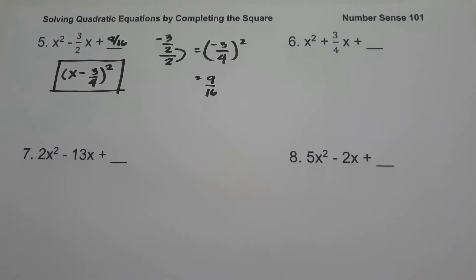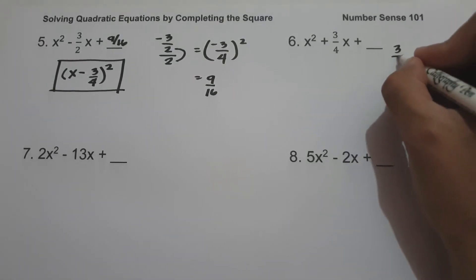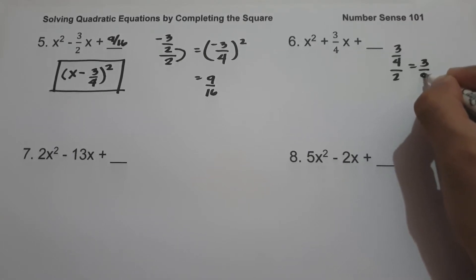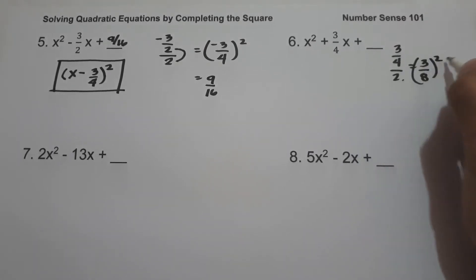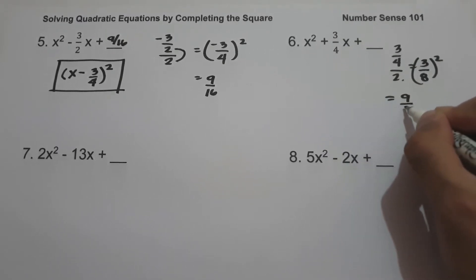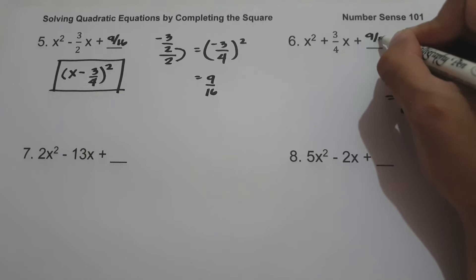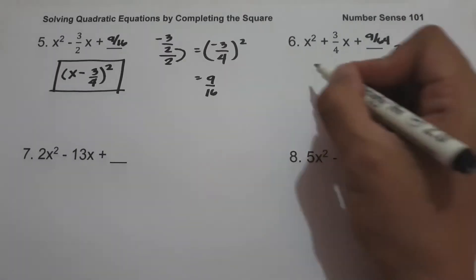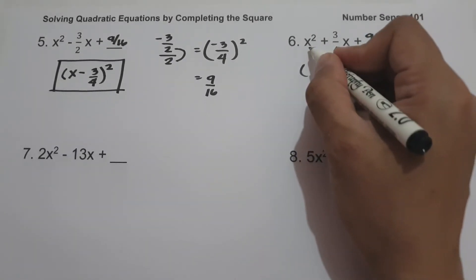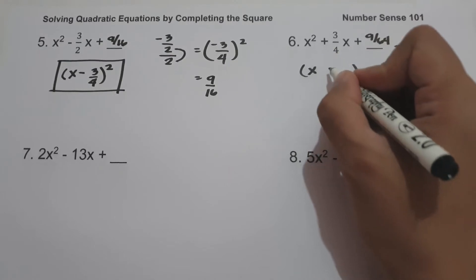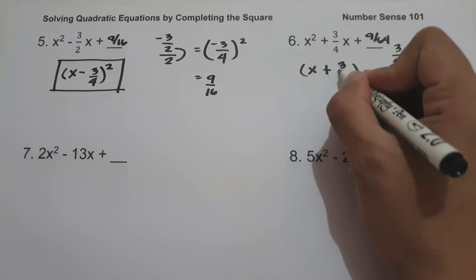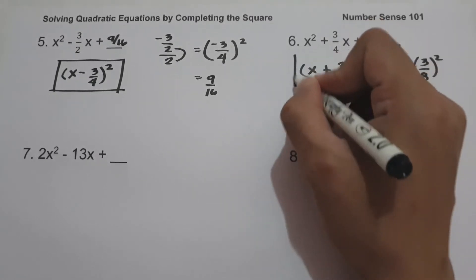On number 6, we have x squared plus 3 over 4x plus blank. Let us have 3 over 4 divided by 2, that is 3 over 8. Let us square this: 3 squared is 9, 8 squared is 64. So 9 over 64 must be added to make this expression a perfect square trinomial. To factor, the square root of x squared is x, the sign of the middle term is positive, the square root of 9 over 64 is 3 over 8, and then square. And this will be our answer.